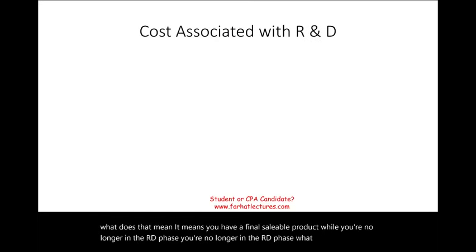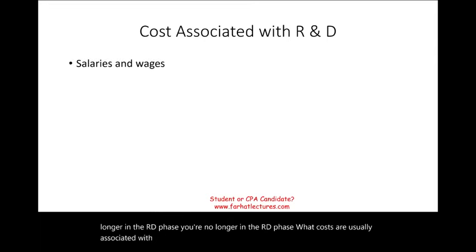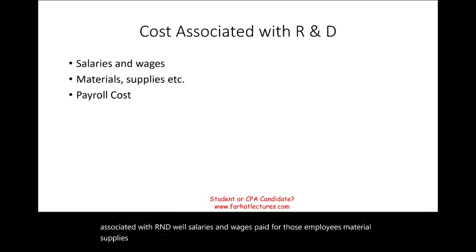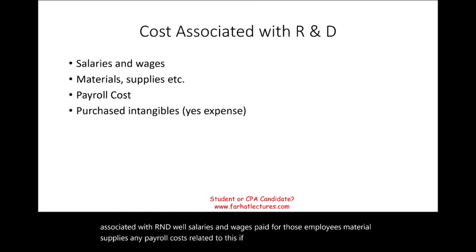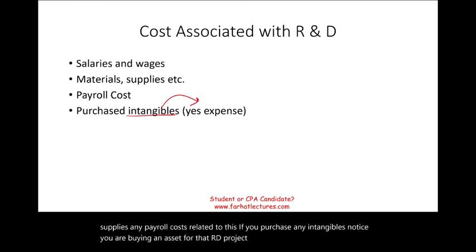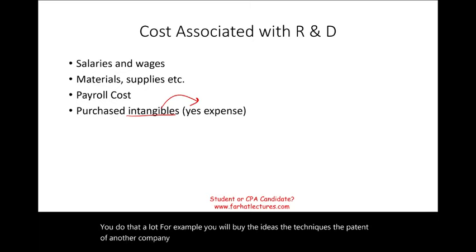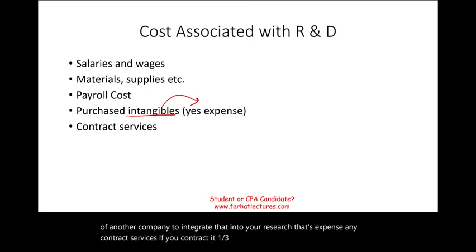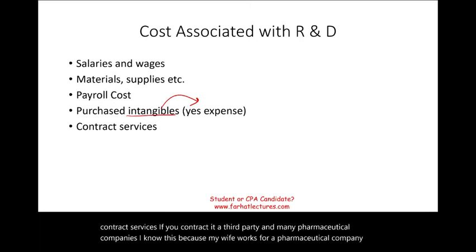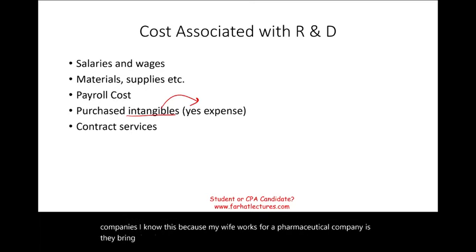What costs are usually associated with R&D? Salaries and wages paid to those employees, materials, supplies, and any payroll costs related to the project. If you purchase any intangibles — for example, buying the ideas, techniques, or the patent of another company to integrate into your research — that's expensed. Any contract services, such as when pharmaceutical companies buy research and development from an outside party as a contract, are also expensed. Any indirect costs are still expensed.